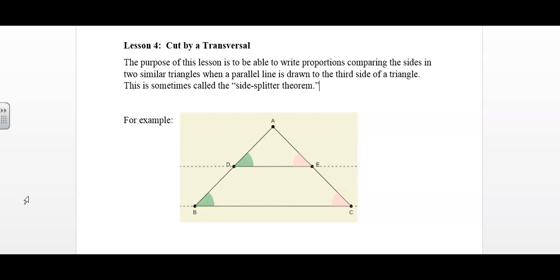This is sometimes called the side splitter theorem. For example, if you look at the diagram, you can see that there is a triangle, a smaller triangle ABC within a larger triangle ADE. BC is drawn so that it is parallel to DE. In this lesson, we will take a look at why these two triangles are similar and then what proportions we can write to help us find missing side lengths.